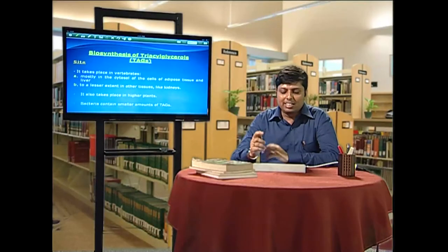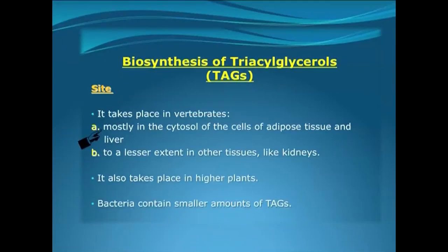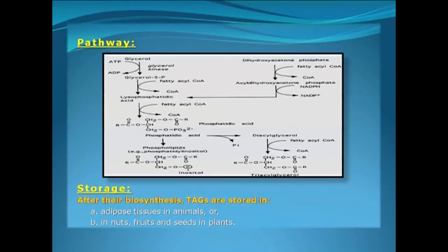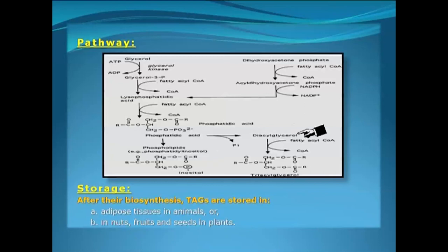Biosynthesis of triacylglycerol takes place in adipose tissues and liver, and to a lesser extent in kidney cells. It also takes place in higher plants, and bacteria contain smaller amounts of triacylglycerol. Triacylglycerol synthesis takes place from glycerol: glycerol is first phosphorylated by ATP to form glycerol-3-phosphate. This glycerol-3-phosphate by accepting a fatty acyl-CoA gets converted to lysophosphatidic acid, which upon receiving fatty acyl-CoA once more gets converted to phosphatidic acid, which by losing inorganic phosphate gets converted to diacylglycerol. This diacylglycerol receives another fatty acyl-CoA to form triacylglycerol.